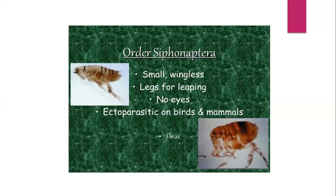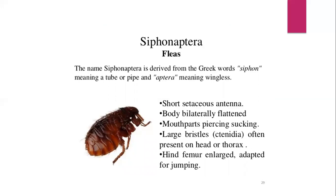Siphonaptera — Siphonapterans are small, wingless insects having legs used for leaping. The eyes are degenerated or absent. They are ectoparasitic on birds and mammals and are commonly known as fleas. The name Siphonaptera is derived from the Greek word 'siphon' meaning a pipe or tube, and 'a-tera' meaning wingless. It includes about 2,500 species of small, flightless insects — fleas — that survive as external parasites of mammals and birds, living by consuming blood. Hence they are known as hematophagous.